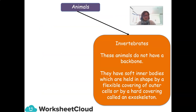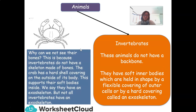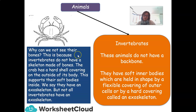Our next group are the invertebrates. These animals do not have a backbone. They have soft inner bodies held in shape by a flexible covering of outer cells, or by a harder covering called an exoskeleton. Invertebrates do not have a skeleton made of bone — for example, the crab has a hard shell covering on the outside of its body that supports its soft body inside. We say they have an exoskeleton.